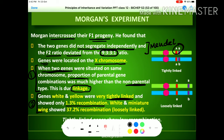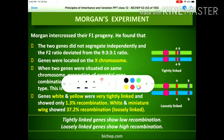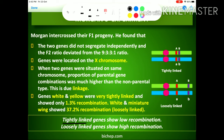Second conclusion: the genes for white eye and yellow body were highly or tightly linked, showing only 1.3% recombination. Whereas white eye and miniature wing showed 37% recombination, meaning they are loosely linked. The magnitude of recombination depends on the distance between genes — tightly linked means less distance and less recombination; loosely linked means more distance and higher recombination. Tightly linked genes show low recombination; loosely linked genes show higher recombination.